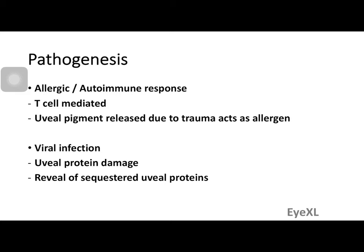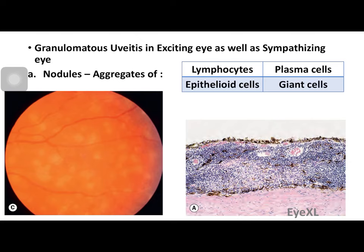The problem lies in an allergic or autoimmune response by the body. T cells are incriminated, and the uveal pigment released after trauma starts acting like an allergen, inciting an allergic response. Sequestered proteins — such as lens protein inside the lens capsule — if released into the systemic circulation, incite an immune response as foreign bodies. Another theory is that viral infections cause uveal protein damage, revealing previously sequestered uveal proteins.